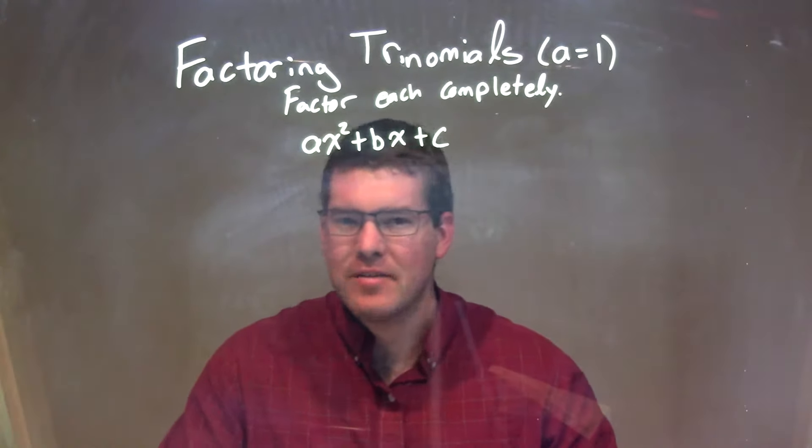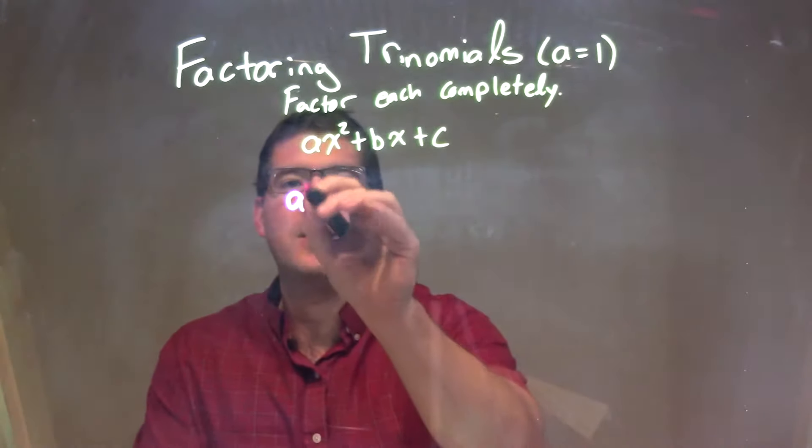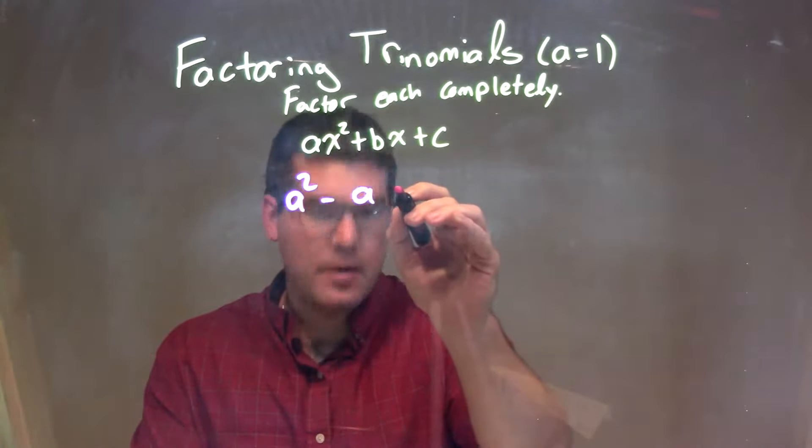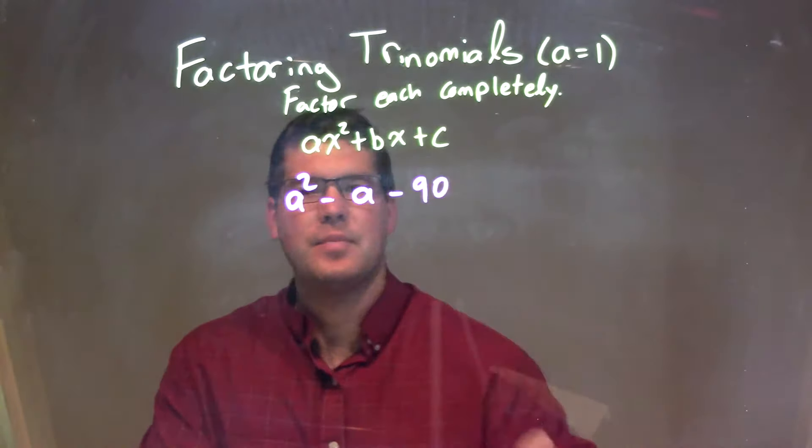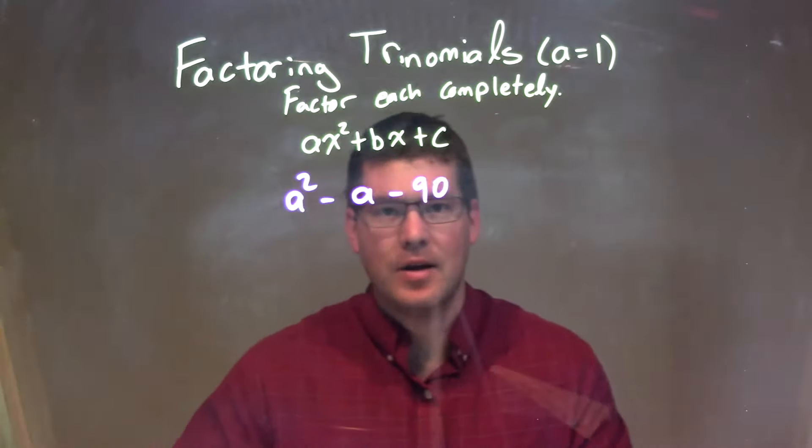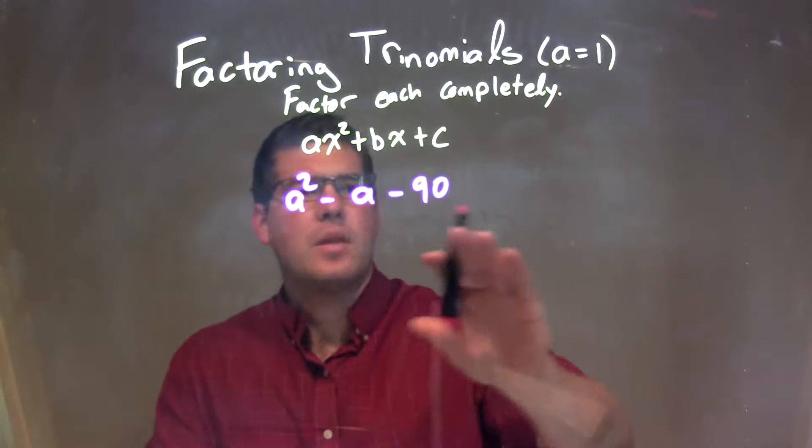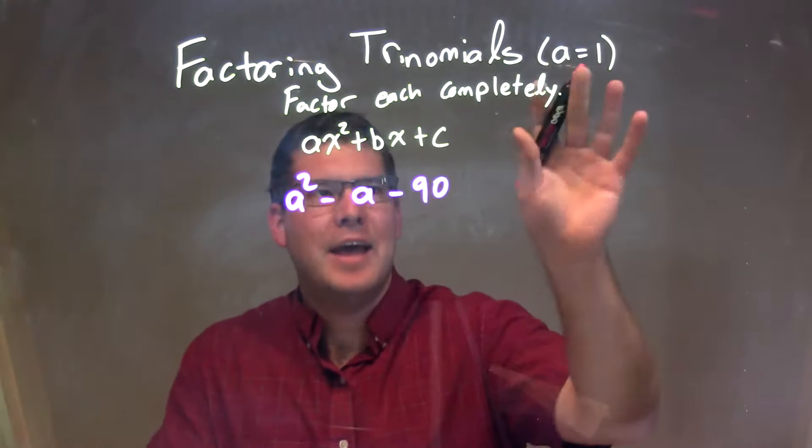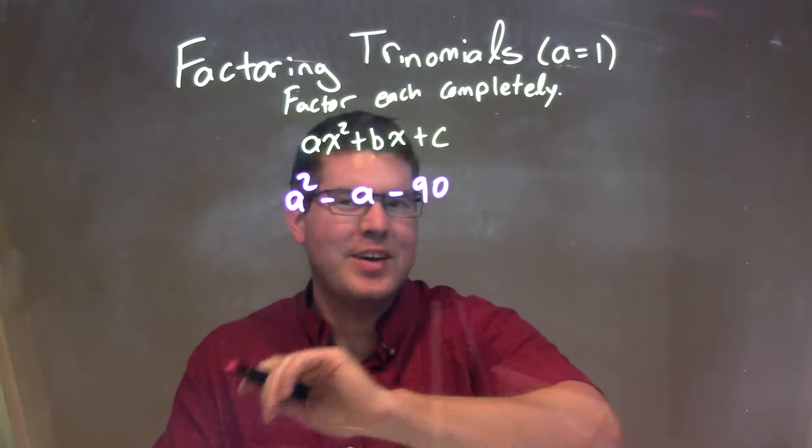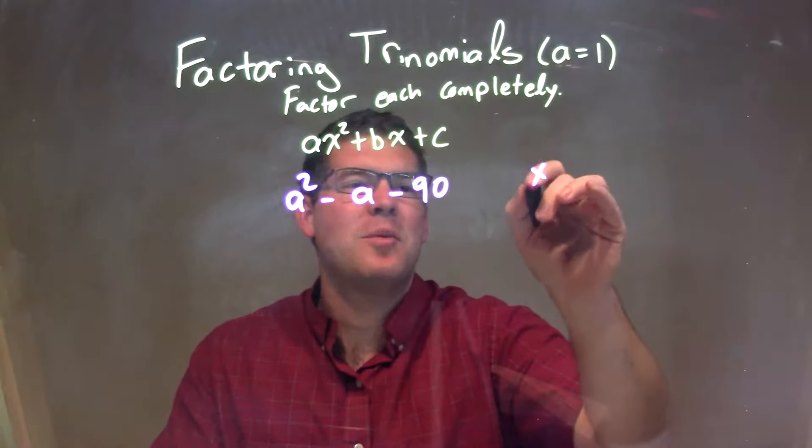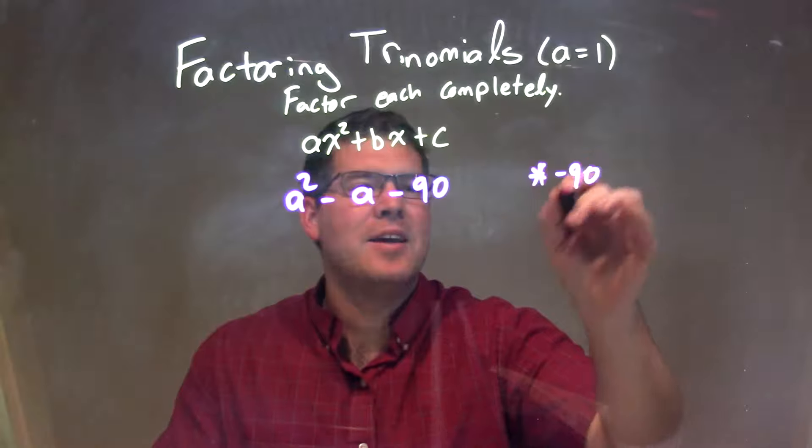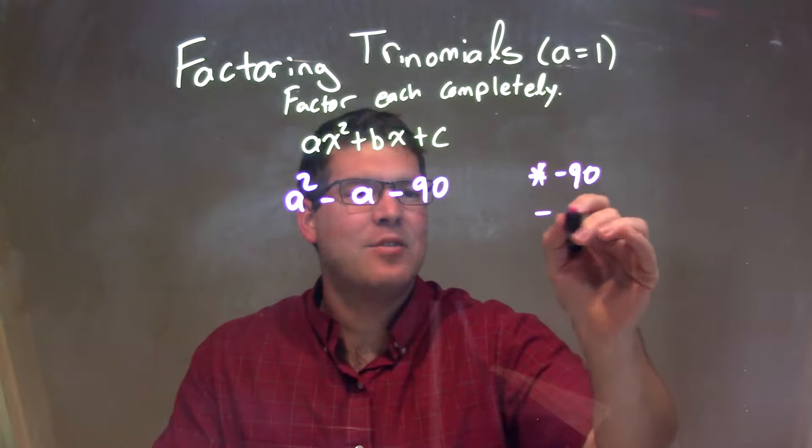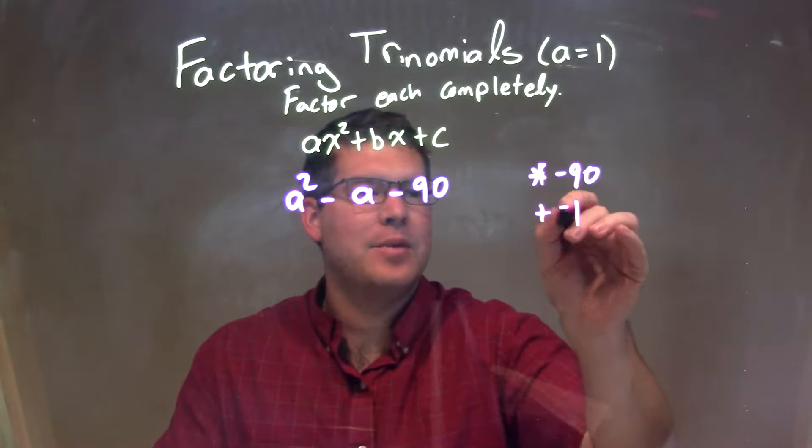So if I was given this trinomial, a squared minus a minus 90. What I want to ask myself is, I have an a value, the coefficient in front of a squared is 1. What two numbers multiply to be negative 90 but add to be negative 1?